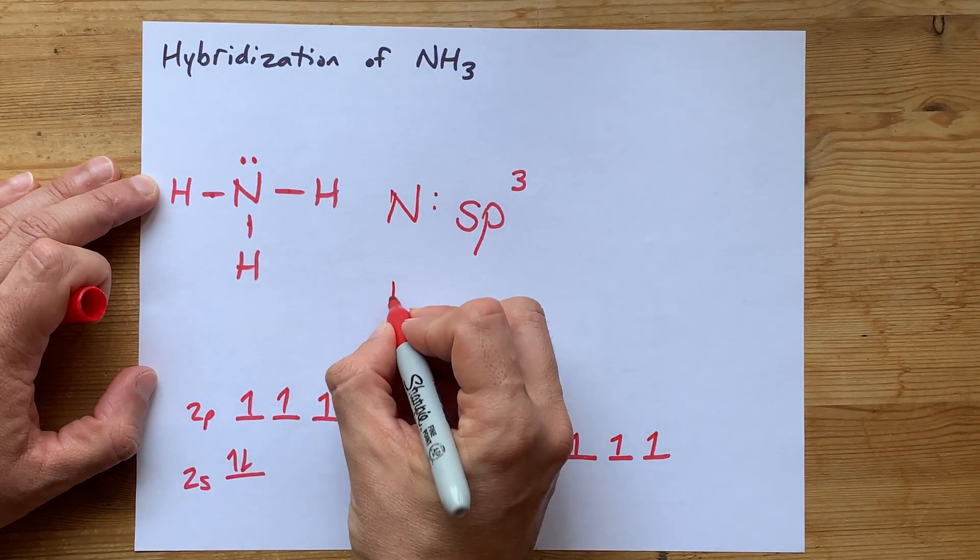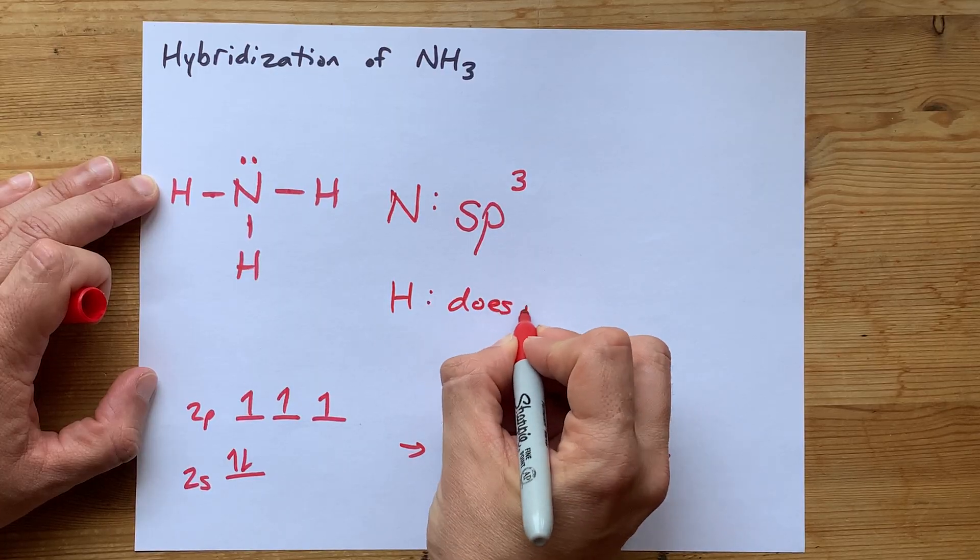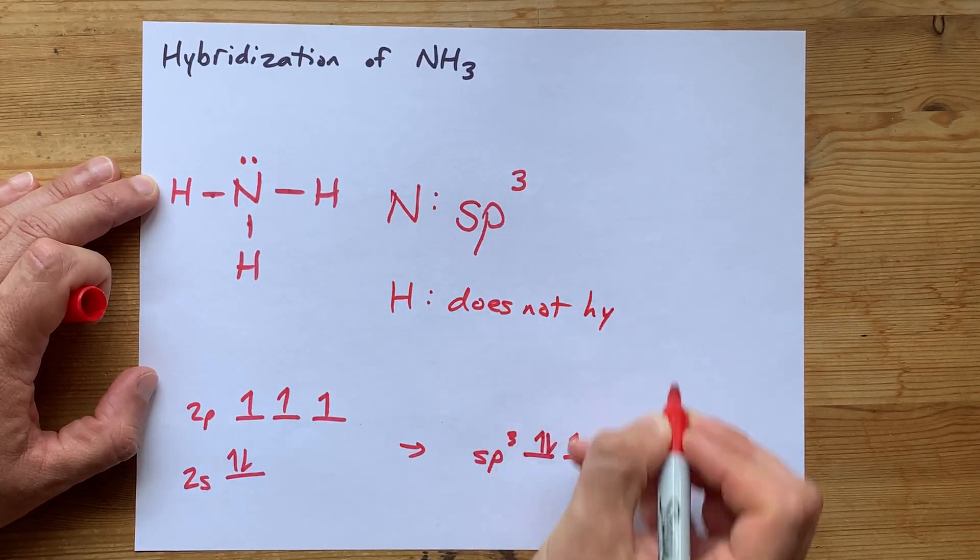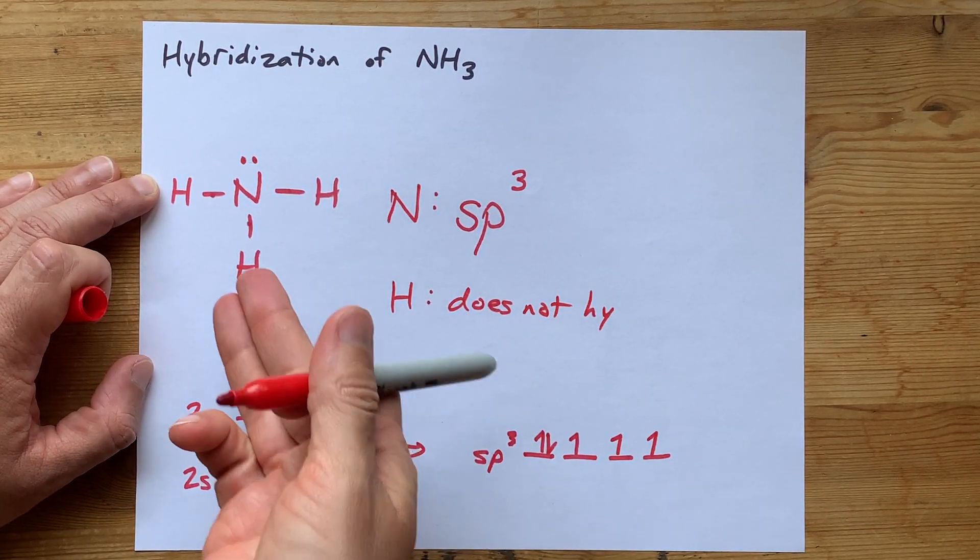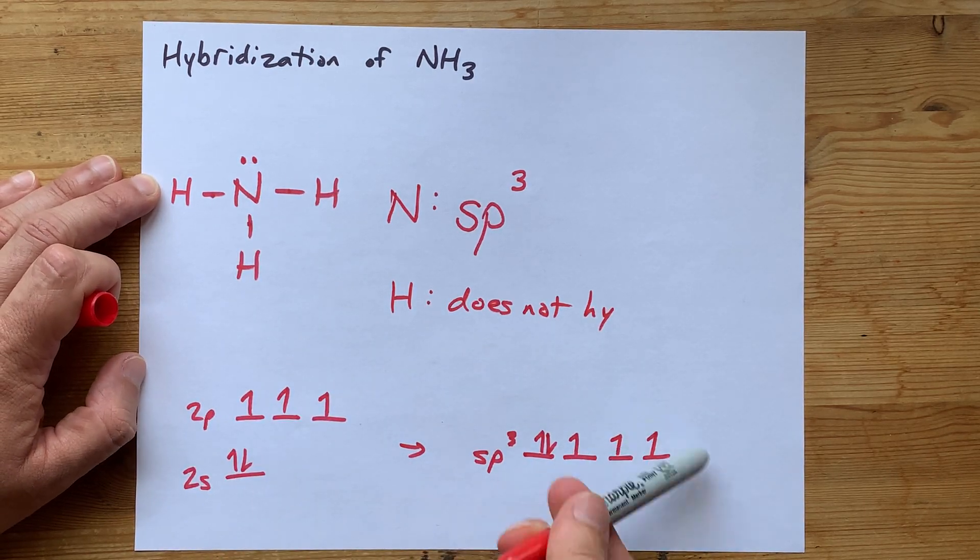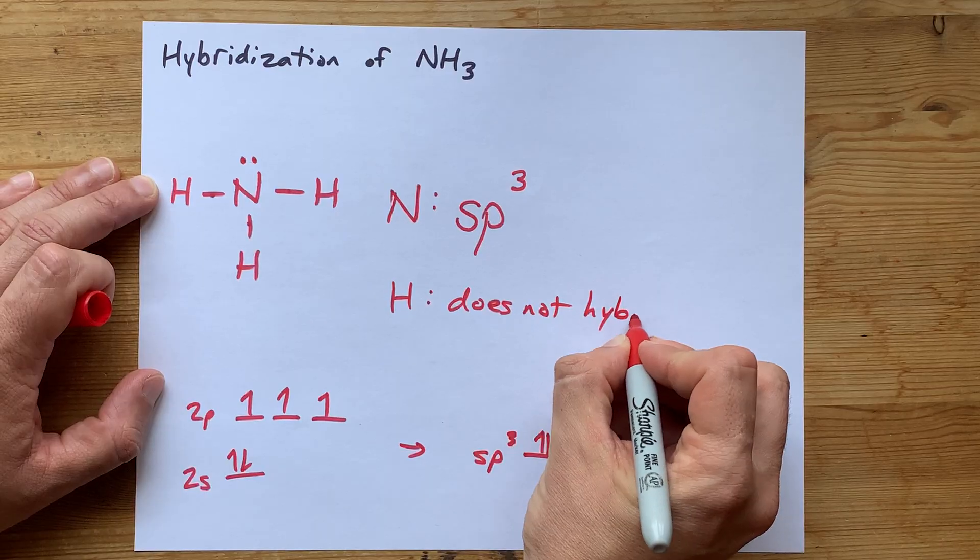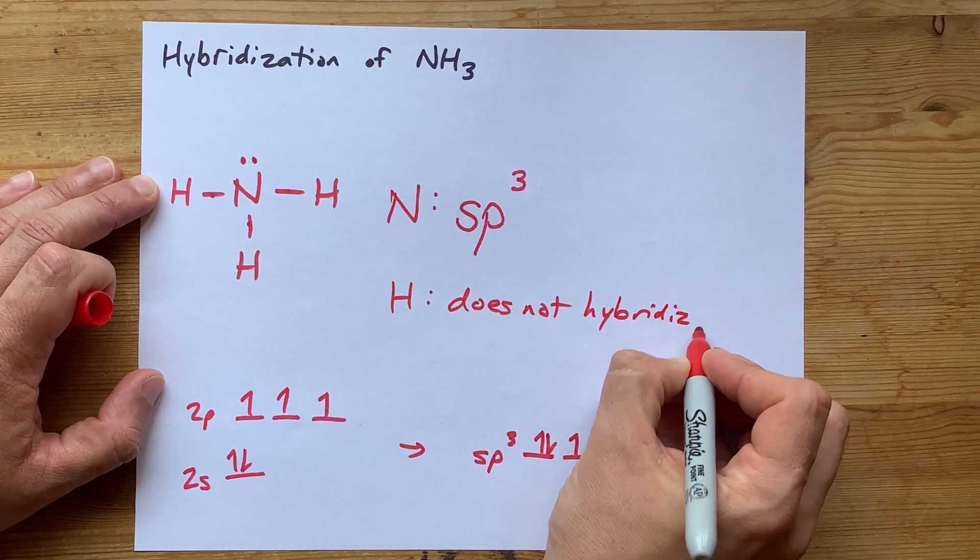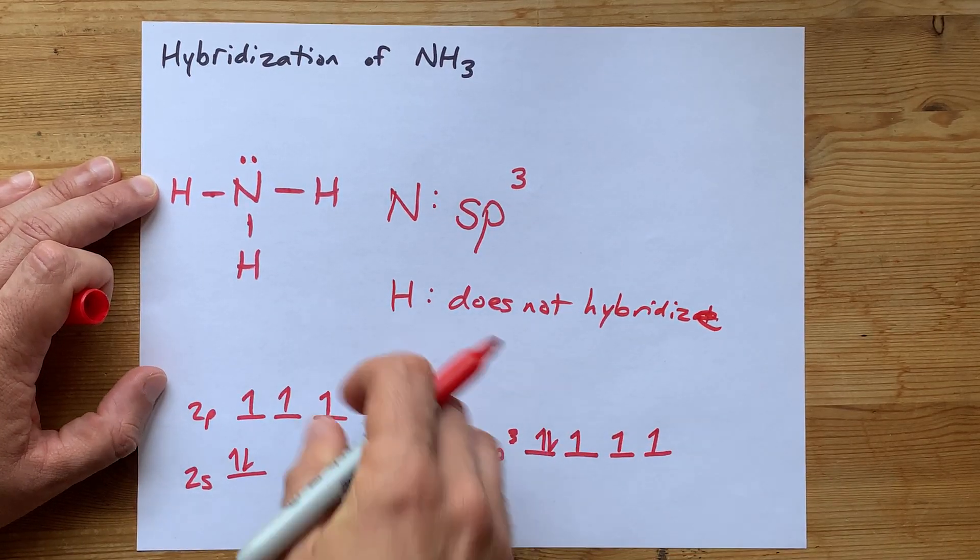Hydrogen does not hybridize. The 1S orbital that hydrogen has a single electron in can overlap with any of these hybridized orbitals. And so the hydrogen itself is not hybridized.